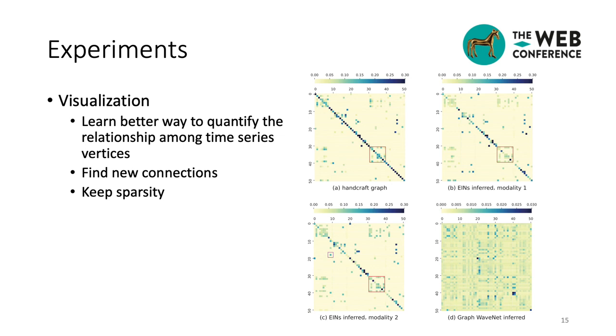Comparing the inferred spatial labels from the EINs and from the graph wavenet, we can observe that the spatial labels from the EINs remain sparsity, while those from the graph wavenet were dense and tiny. As a result, the EINs take advantage of controlling the complexity.